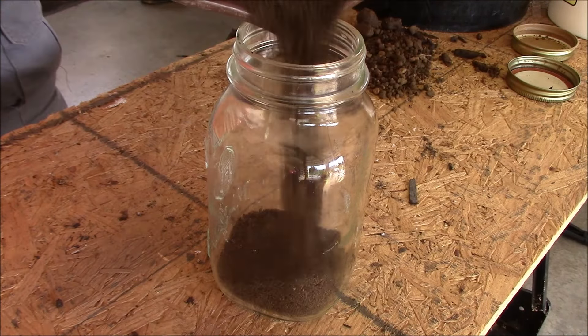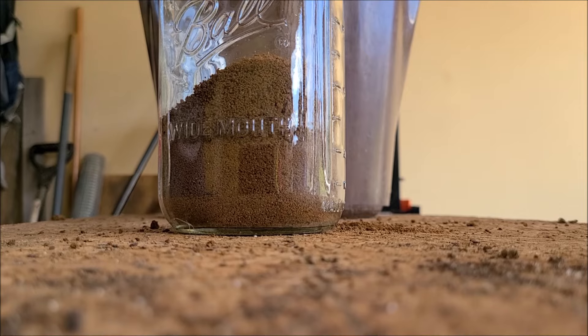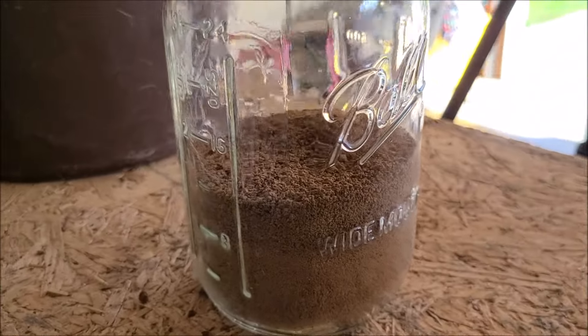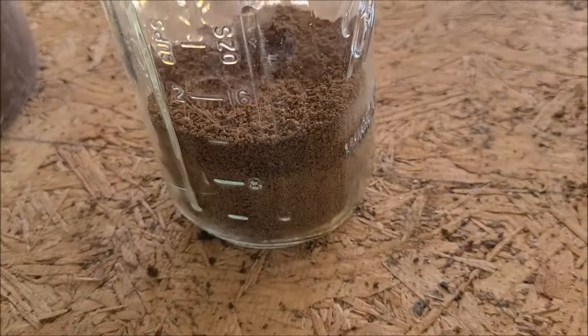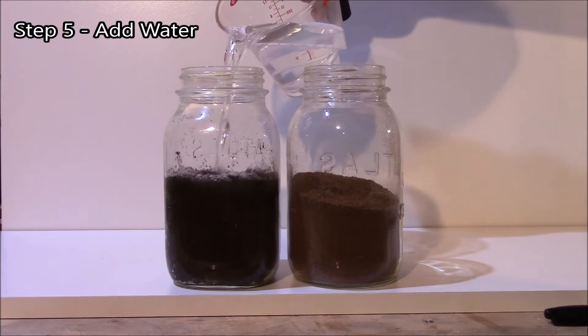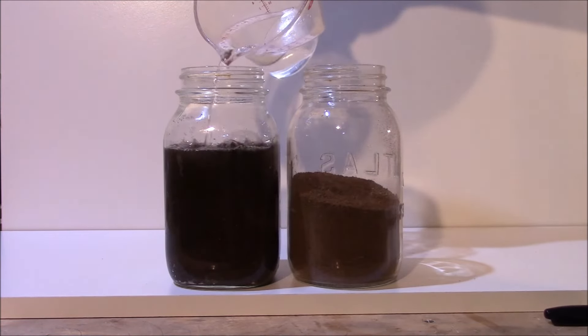Depending on your jar size, you want to go 2 to 3 inches, so 50 to 75 millimeters. The sifted soil really makes this easy to do.